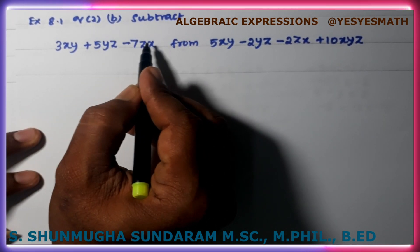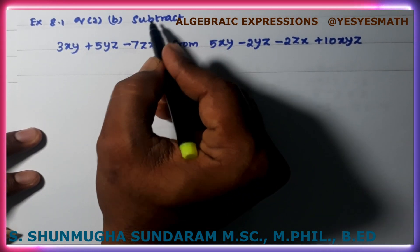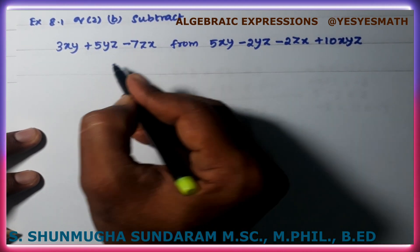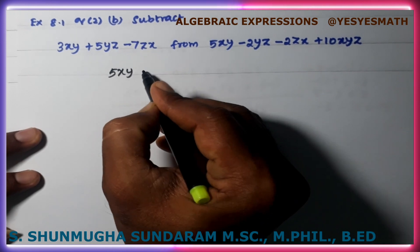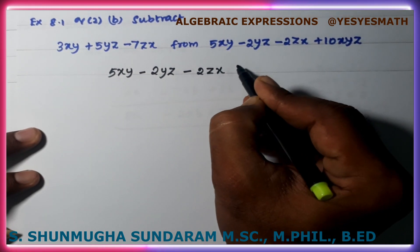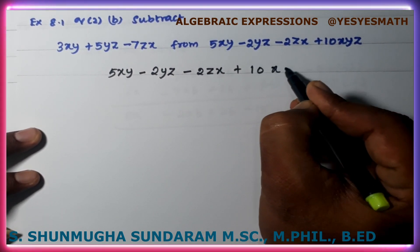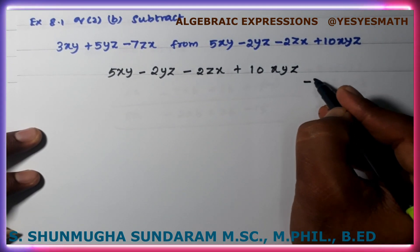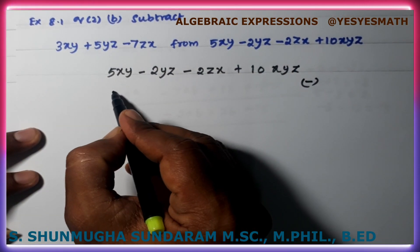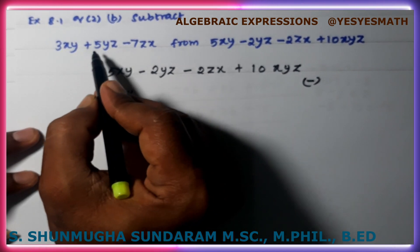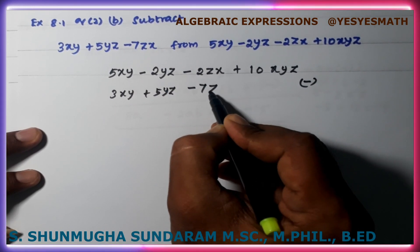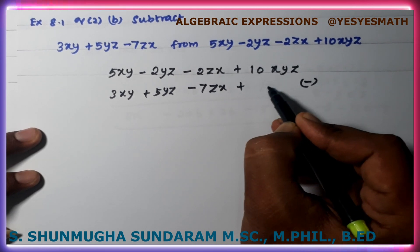Second subtraction: subtract 3XY minus 5YZ minus 7ZX from 5XY minus 2YZ minus 2ZX plus 10XYZ. Separate the like terms: 3XY and 5XY are XY terms. 5YZ and minus 2YZ are YZ terms. Minus 7ZX and minus 2ZX are ZX terms. 10XYZ has no like term, so it stays as 10XYZ.